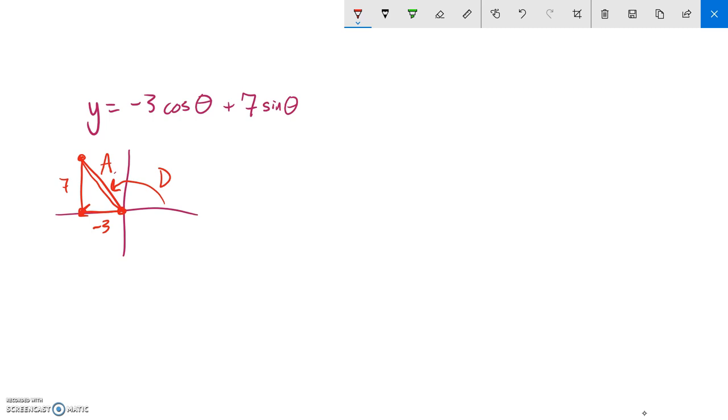So I can find A using Pythagorean Theorem because this is a right triangle. So A is the square root of 7 squared plus negative 3 squared. 7 squared is 49. Negative 3 squared is 9. And so if I add those together, I get 58. And square root of 58. Let me see if I can break that down a little bit. 58 divided by 2 is 29. Nope. That's it. So my A value is square root of 58.